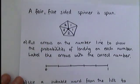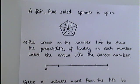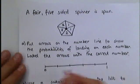Here's another exam style question. It says a fair five-sided spinner is spun, and again, I'm focusing on these number lines. Put arrows on the number line to show the probabilities of landing on each number. Label the arrows with the correct number.